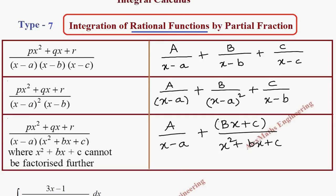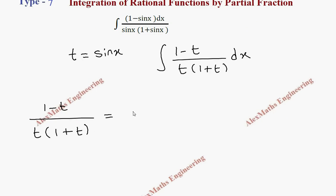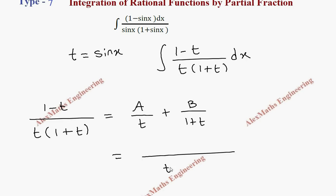We have two factors here, so applying the rule it becomes A over t plus B over (1 plus t). We take the LCM, which is t times (1 plus t), giving us A times (1 plus t) plus B times t in the numerator.